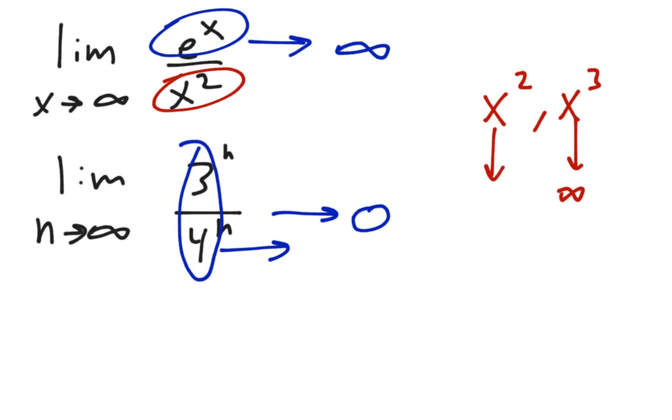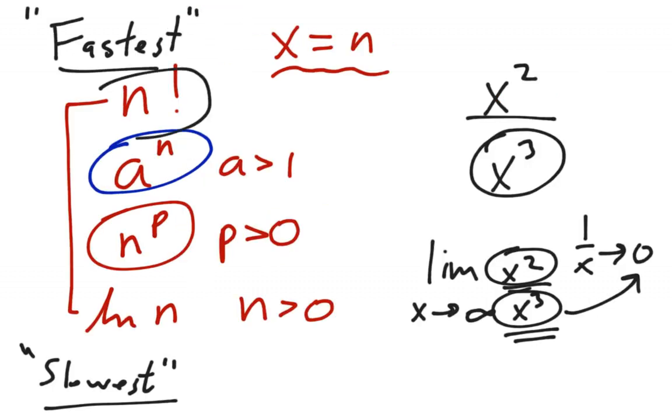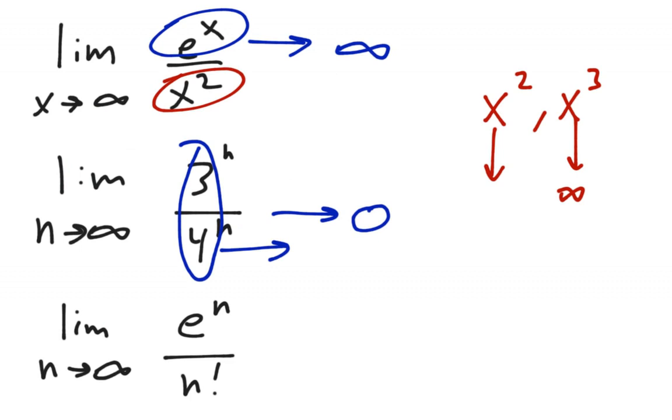Let's look at another one. Let's say we have the limit as n approaches infinity of e to the n over n factorial. And now, going back to our growth rates, n factorial grows the fastest of all, and because it's on bottom, that will drag this to 0.